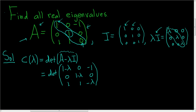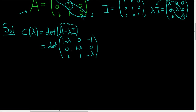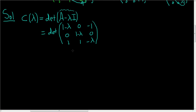Now we're ready to find the determinant using cofactor expansion, also called Laplace expansion. The way this works is we pick any row or column and expand along it. I'm going to choose the first row.